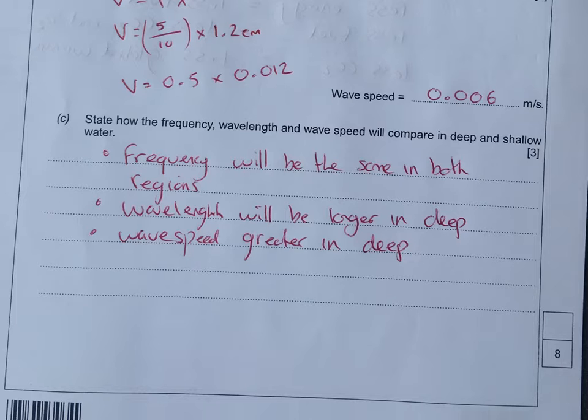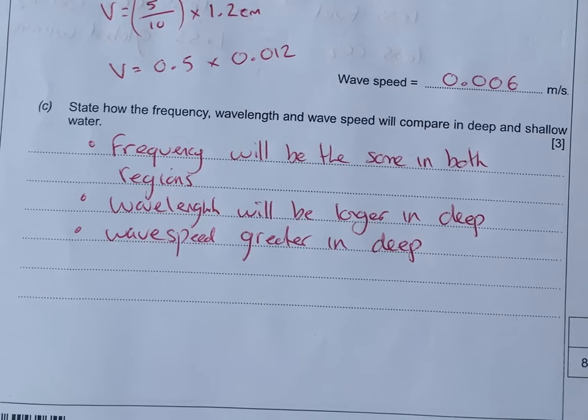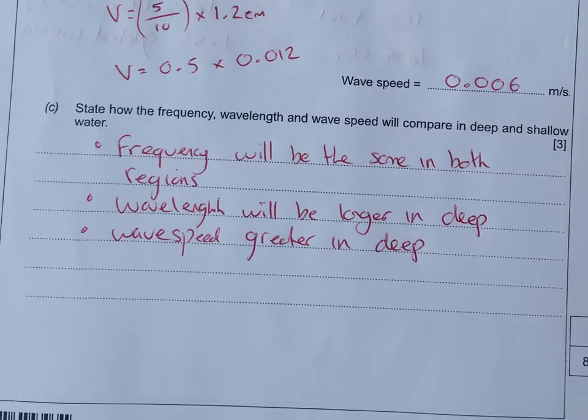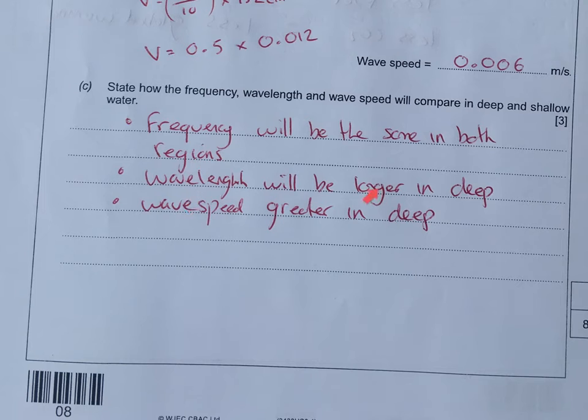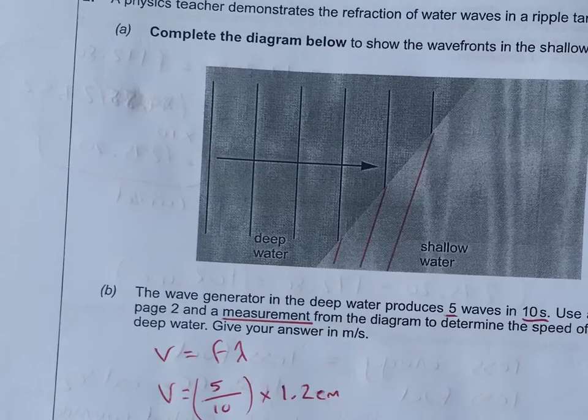State the frequency, wavelength and wave speed will compare in deep and shallow water. Some of this you can get from the diagram. The main learning is that the frequency will be the same in both regions. If the frequency is the same and the wavelength is going to be longer, then the wave speed has got to be greater to get your same number of waves past each second. Therefore, the wave speed is greater in deep water.